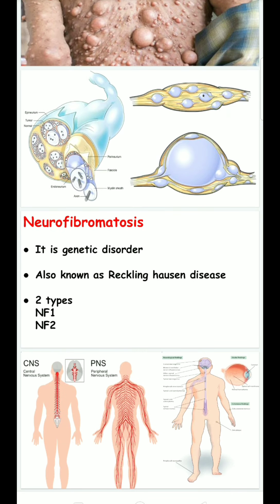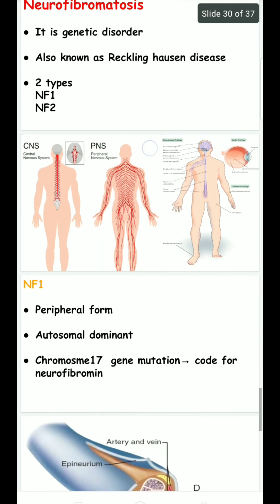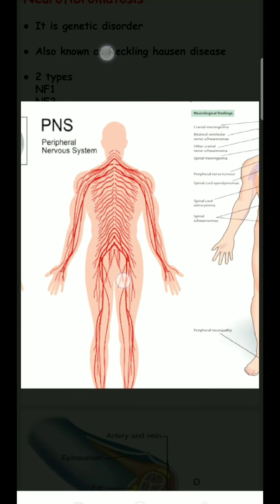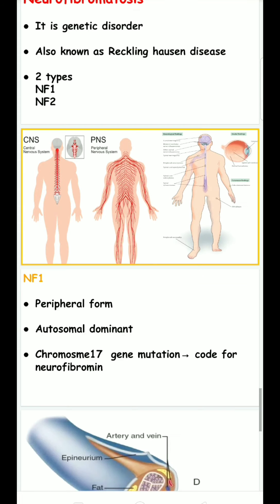Neurofibromatosis is a genetic disorder, also known as Recklinghausen's disease. It is of two types: neurofibromatosis type one and neurofibromatosis type two. Neurofibromatosis type one is the peripheral form. It is autosomal dominant, due to a mutation of chromosome 17.